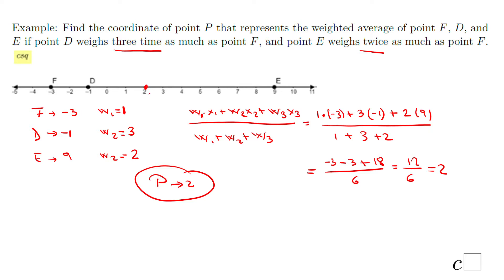Somewhere here. You know, this again is closer to point D — because the weight of point D is 3 times as much as point F.